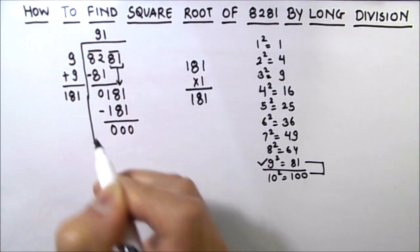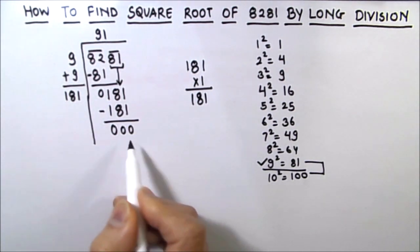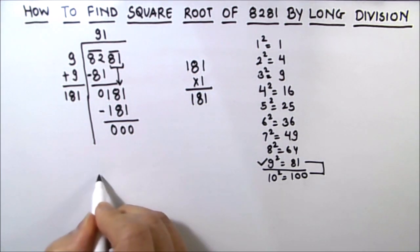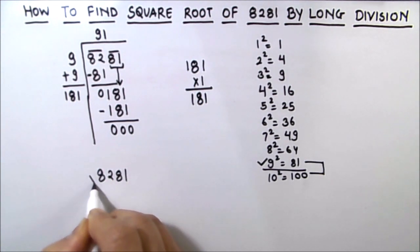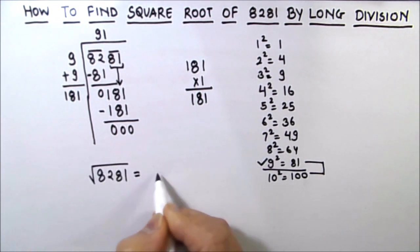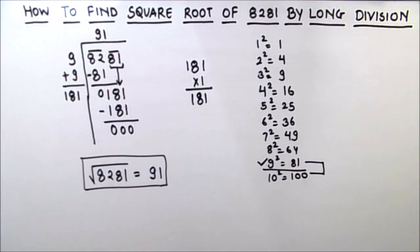So here we got 0 as our remainder, so we are going to stop here. The square root of 8281 is equal to 91. So this completes our square root of 8281, which is equal to 91.